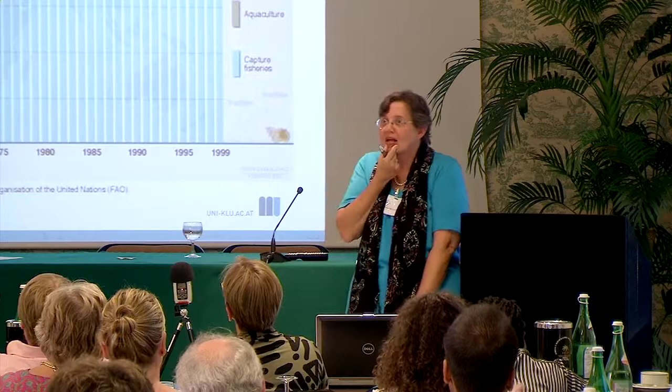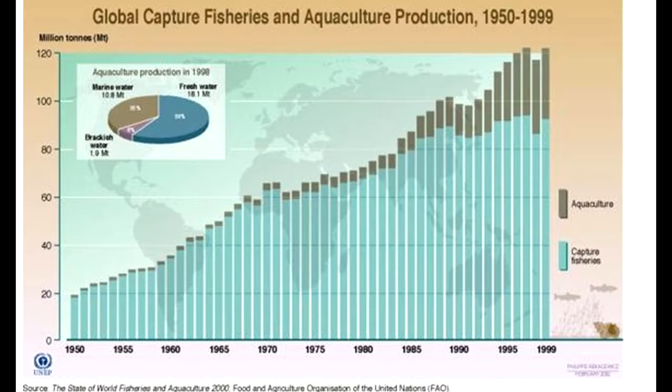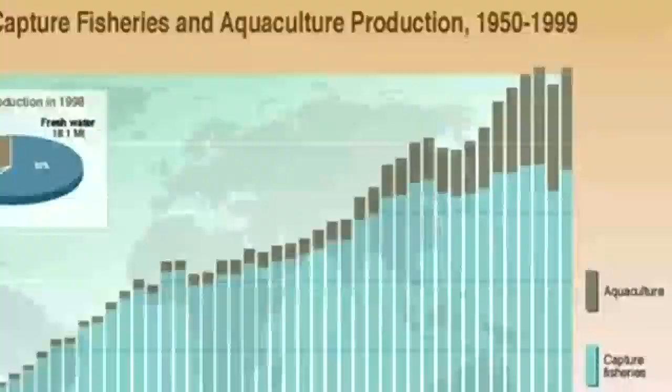Global marine and freshwater biodiversity decline also relates to fish catches. Since the 1950s, global capture fisheries production has increased six-fold. There is not a single unexploited fishery on this planet — not a single valuable fish species that hasn't already been targeted. Aquaculture is growing in importance.